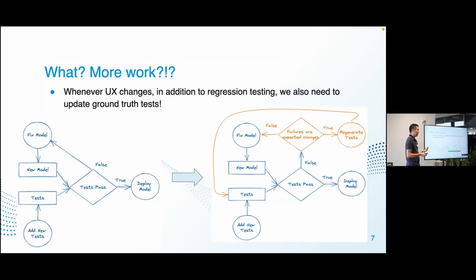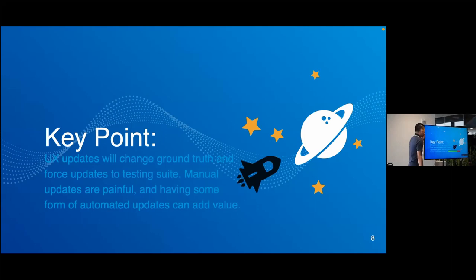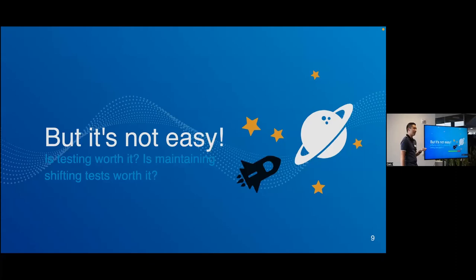This applies to products like AI assistants for real estate or feed recommendations where you have rules like not showing posts from the same friend three times in a row. The key point: UX updates will always change the ground truth and force updates to the testing suite. Manual updates are super painful — literally copy-pasting changes in code. Having some form of automation can be really valuable, but it's not easy — you're basically trying to pin down a moving target all the time.